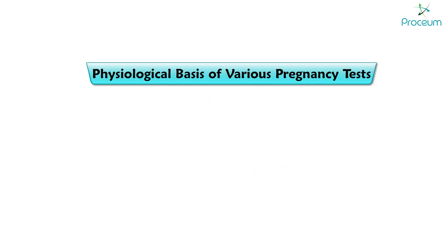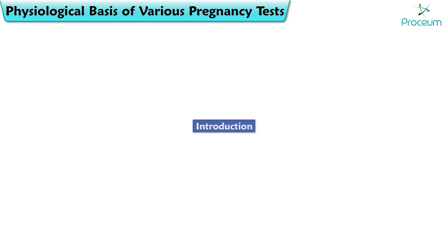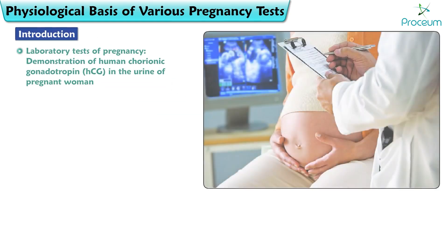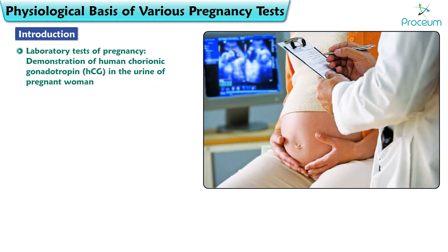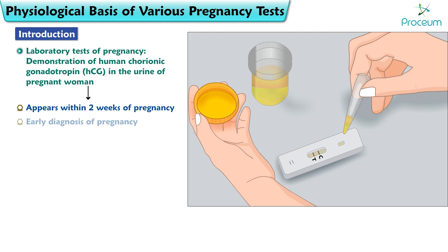Physiological Basis of Various Pregnancy Tests. The laboratory tests of pregnancy are based on a demonstration of human chorionic gonadotropin in the urine of the pregnant woman. As human chorionic gonadotropin in the urine appears within two weeks of pregnancy, it provides the early diagnosis of pregnancy.